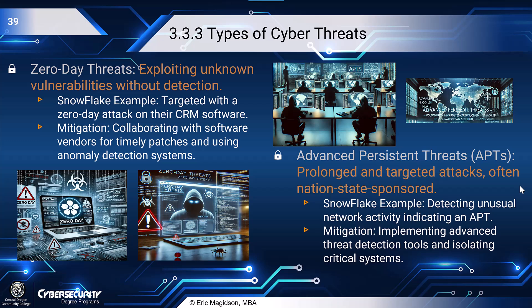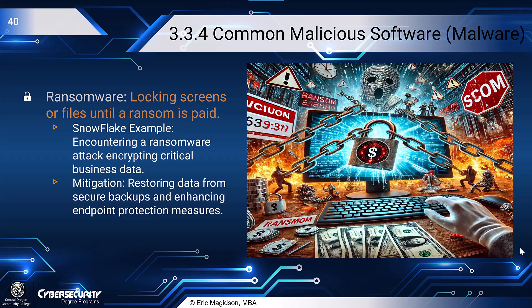Advanced Persistent Threats (APTs) are prolonged and targeted attacks, often nation-state sponsored. We get into a system, go deeper, gain more access and control, find other vulnerabilities, and identify vulnerable operating system versions, SQL databases, and web apps. In Snowflake's example, detecting unusual network activity indicated an APT — monitoring outbound traffic might reveal traffic from an unexpected IP address and port. Mitigation includes implementing advanced threat detection tools and isolating critical systems via VLANing.